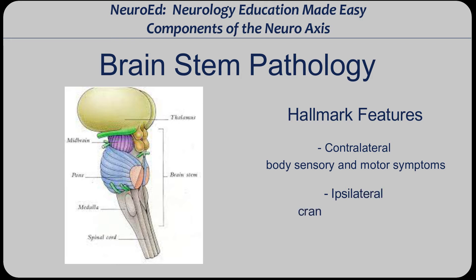If you didn't catch this when you were reading about these different syndromes, pause the video, look up these syndromes, and see that it is actually listed right there. So: ipsilateral cranial nerve dysfunction with contralateral body dysfunction — dysfunction meaning sensory or motor loss. There is nowhere else in the body where you can have these crossed findings.